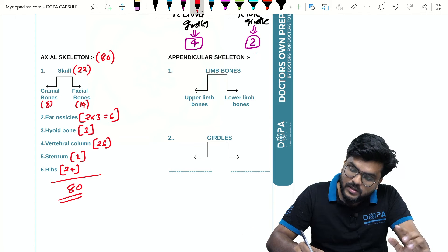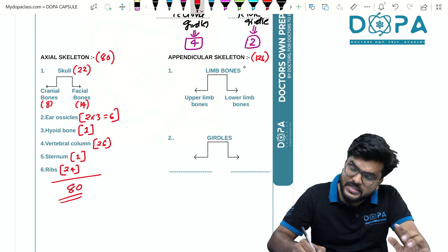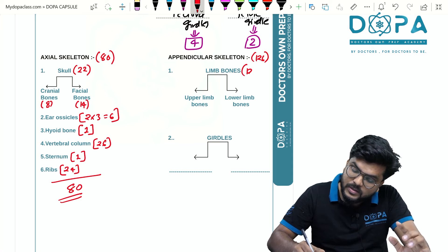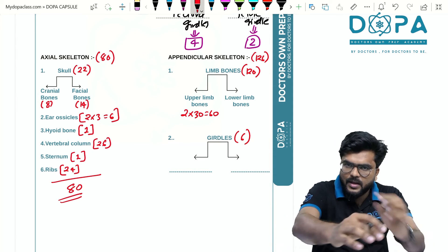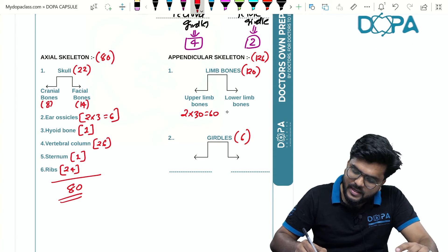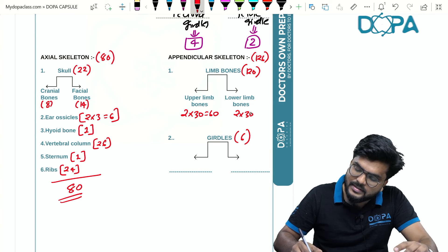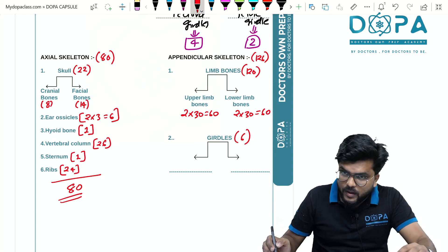In upper limb bones we have totally 2 into 30 equals 60: 30 bones here and 30 bones here. Each individual lower limb also 2 into 30, that is equal to 60 bones.